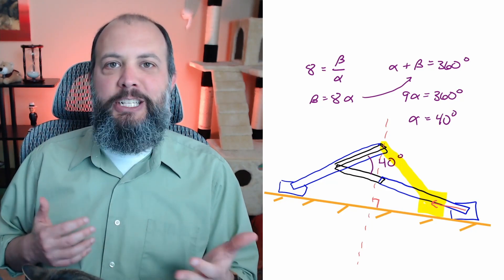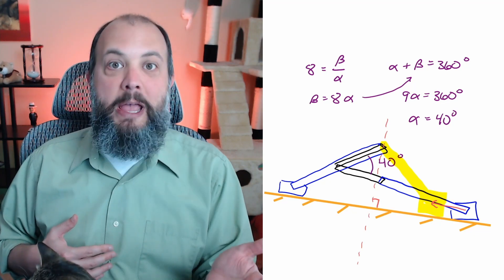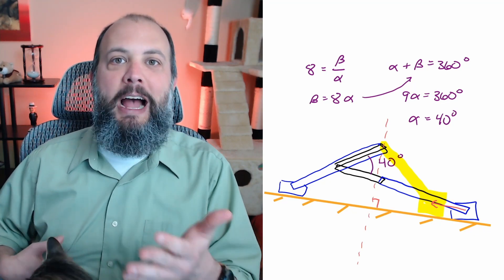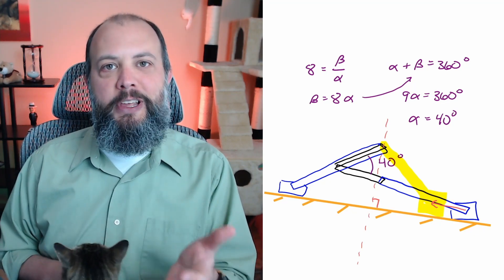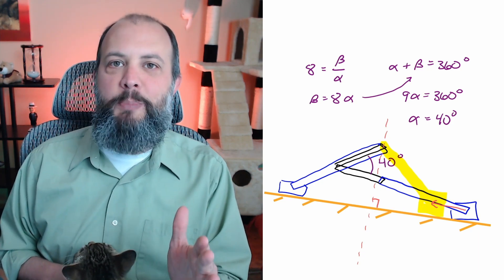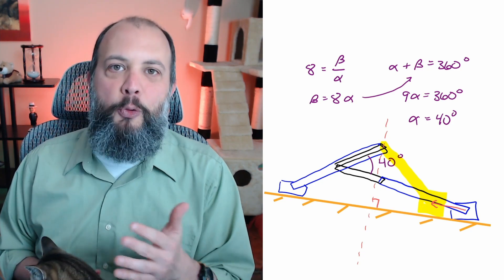And so this is why there's a maximum value for a time ratio or a minimum value for angle alpha. Because you have to ensure that all of your locations are always going to be on one side of the crank position.